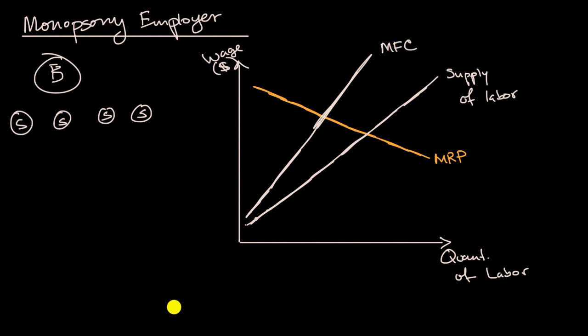And then what's rational is a firm would keep bringing on that factor, in this case labor, would keep hiring folks as long as the incremental revenue that it gets from hiring that next unit is higher than the marginal or the incremental cost. And so they will keep bringing people on as long as the MRP is higher than the MFC. And so we would get to that point right there. And so it'd be rational for this firm to hire this quantity of labor. Let's call that Q sub one.